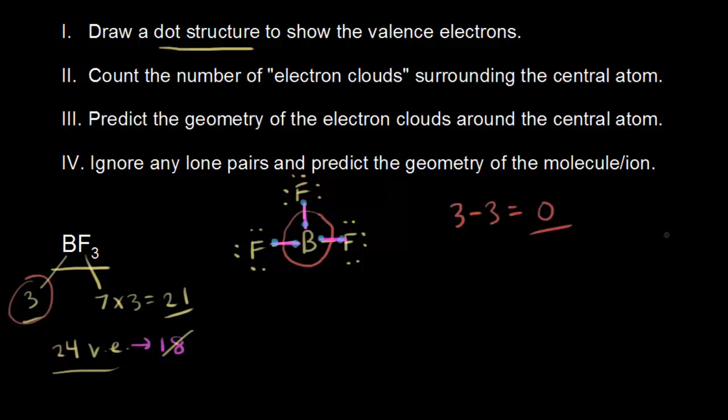Boron can be surrounded by eight electrons. Some textbooks say a lone pair from one of the fluorines could move in to give boron an octet. That would give boron a formal charge, and that's okay — it might actually contribute to the overall structure of this molecule. But for our purposes, we're going to stick with this as our dot structure.